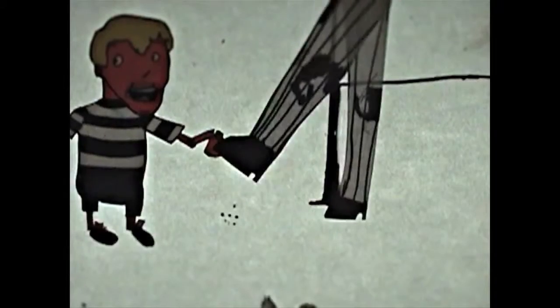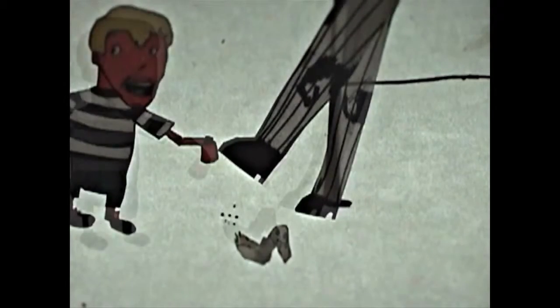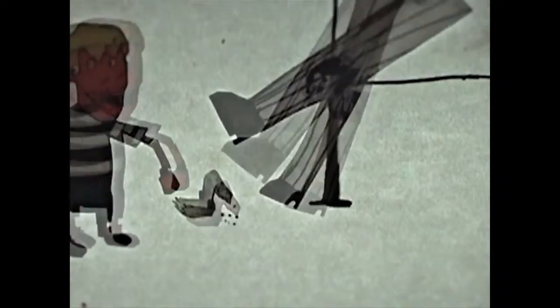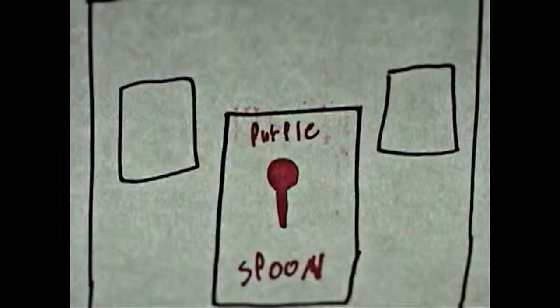The old man smiled, nodded his head and pointed across the street to a house. Billy looked at the house and on its door was in fact a purple spoon.